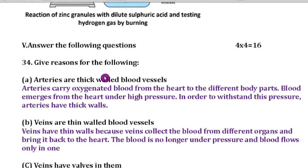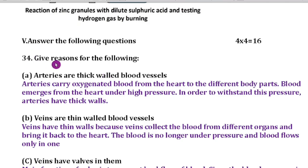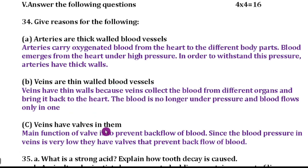Question number 34: Give reason for the following. Arteries are thick walled blood vessels. Why are they thick walled blood vessels? Because arteries carry oxygenated blood from heart to the different parts of the body. Blood emerges from the heart under high pressure. In order to withstand this pressure, arteries have thick wall. Second, veins are thin walled blood vessels. Veins have thin wall because veins collect the blood from different organs and tissues and bring it back to the heart. The blood is no longer under pressure and blood flows only in one vein. Therefore, it has thin wall. Question C: Veins have valves in them because main function of the valves is to prevent backflow of blood. Since the blood pressure in the veins is very low, they have valves that prevent backflow of blood.